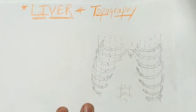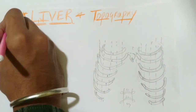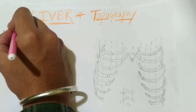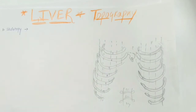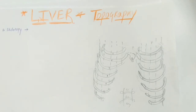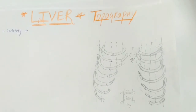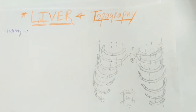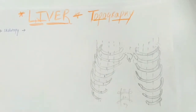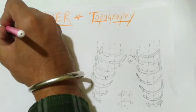So first, what are the three types of topography? The first one is skeletotopy of the liver. Skeletotopy is the topography with respect to your skeleton — that is, with respect to your ribs or with respect to your vertebral column. In skeletotopy, we will tell where the liver is located with respect to your ribs or intercostal spaces, because liver has a variable skeletotopy according to its boundary.